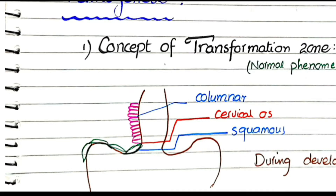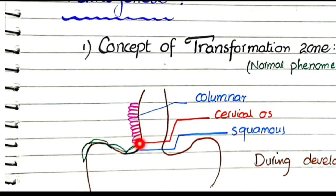The endocervix, just like the uterus, is lined by columnar epithelial cells, while the ectocervix, like the vagina, is lined by squamous epithelial cells. The area of the female genital tract where there is a junction of these columnar and squamous cells is called the squamous-columnar junction.